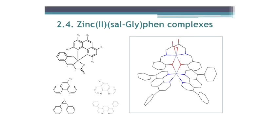We decided to prepare Schiff base complexes with zinc(II) and different phenanthrolines. Our initial idea was to have sulfonated groups in the phenanthroline to increase solubility. The problem was that all the complexes we obtained were very hard to characterize, so we are not sure we have the right complexes. We also tried phenanthrolines that we had in the lab, and characterized a series of zinc complexes.